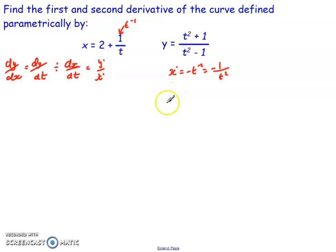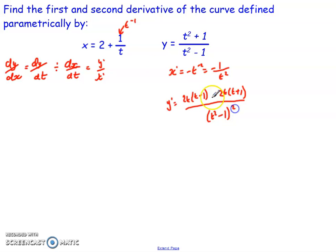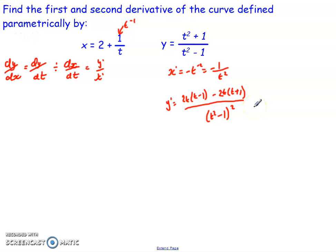For y, I want to calculate y-dashed. In order to do y-dashed, we have to use the quotient rule. What that gives me is 2t bracket (t minus 1), take away 2t bracket (t plus 1), all over (t squared minus 1) all squared. What I can now see is: 2t squared and minus 2t squared cancel, then minus 2t minus 2t, so I end up with negative 4t over (t squared minus 1) all squared.